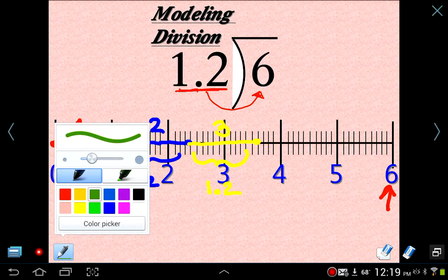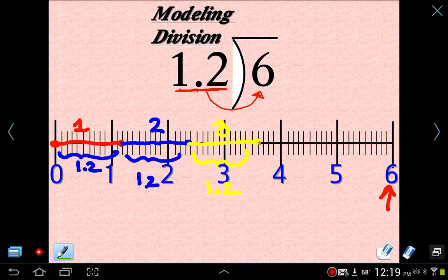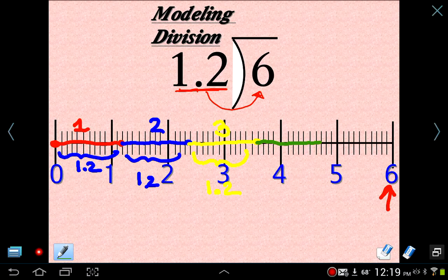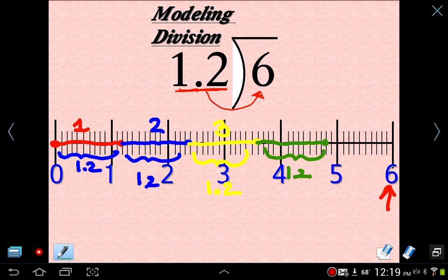Let's keep going here. I'm going to count by tenths. 1 tenth, 2 tenths, 3, 4, 5 tenths, 6, 7, 8, 9, 10, 11, 12. So right there, that is another 12 tenths or 1.2. That's our fourth one.